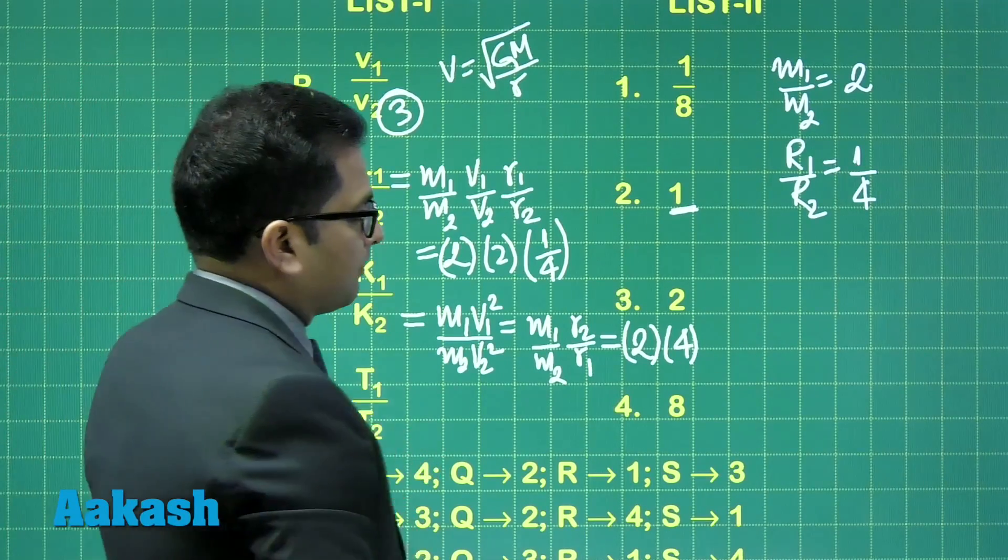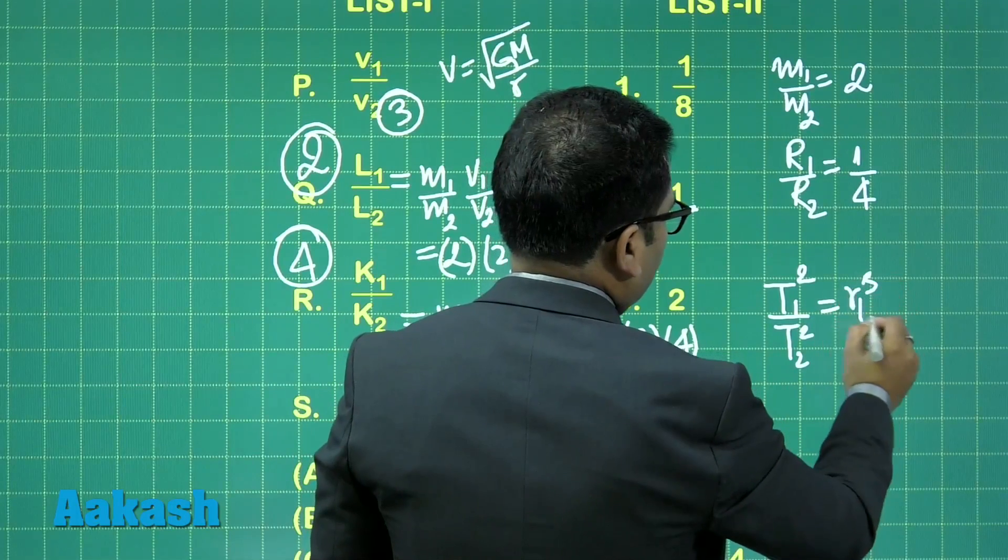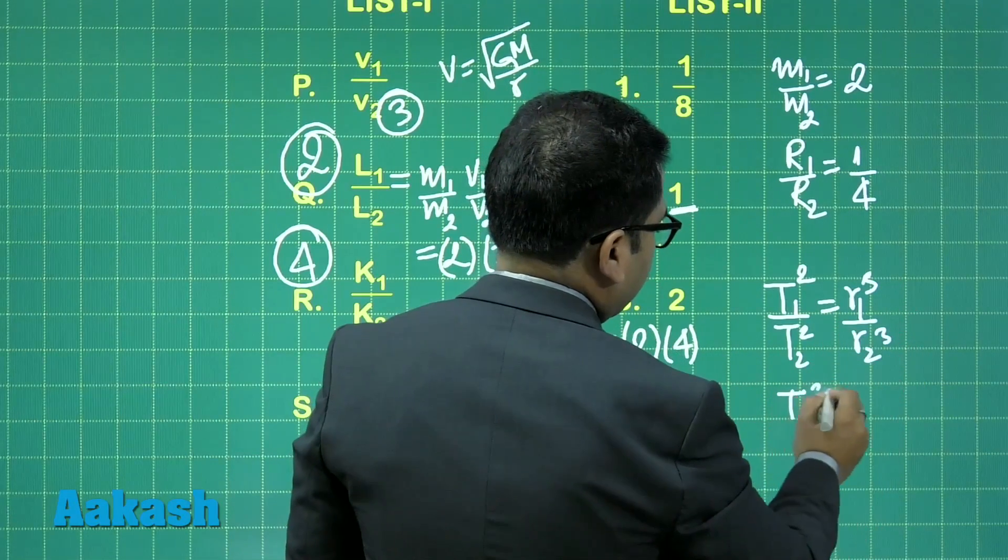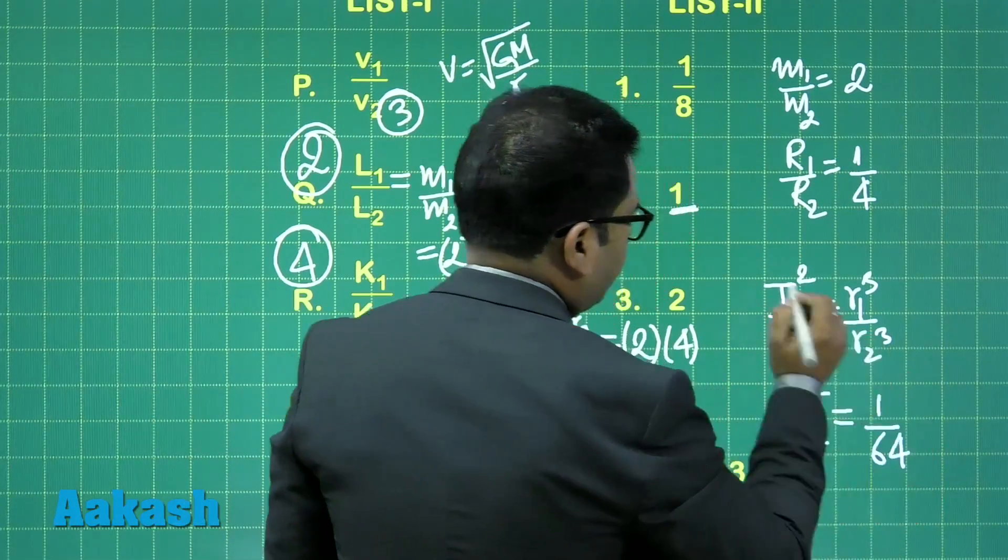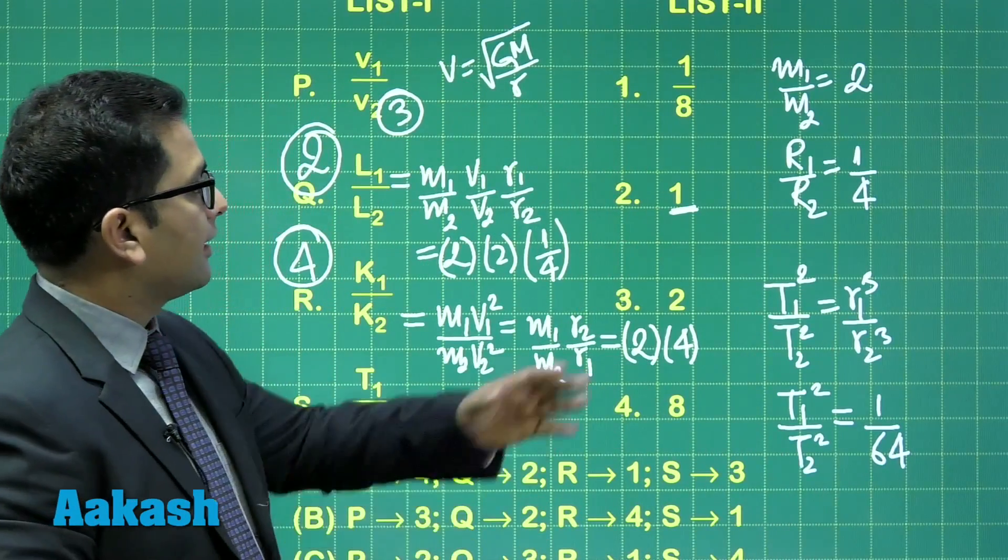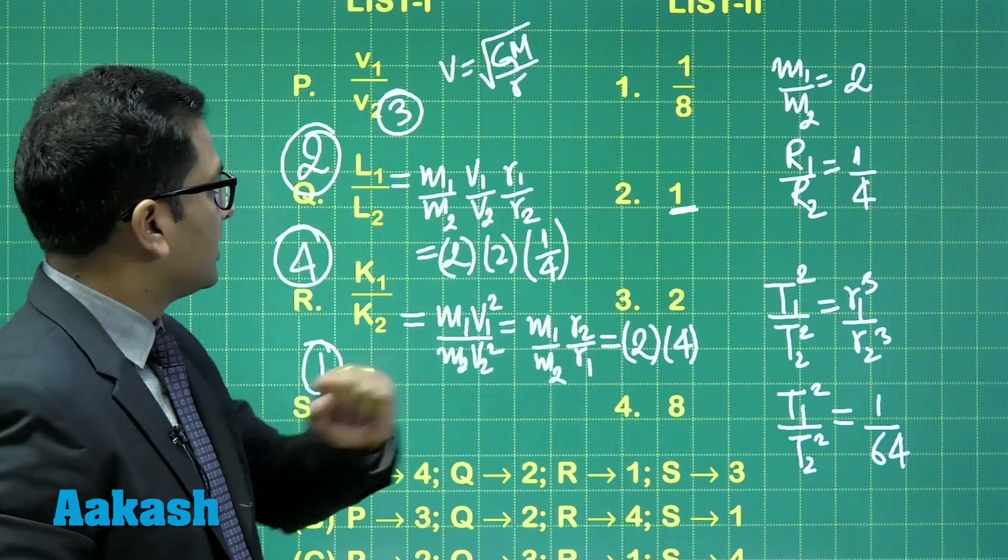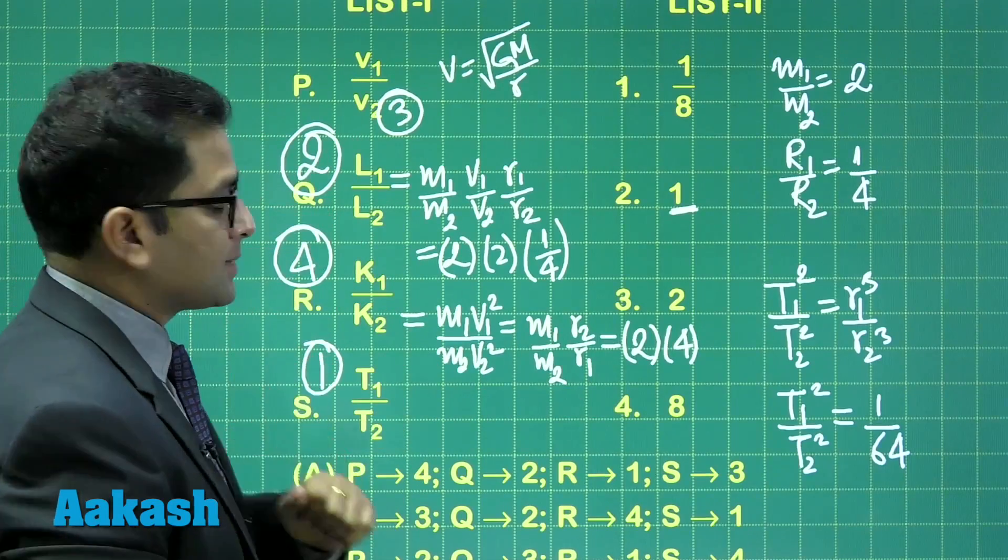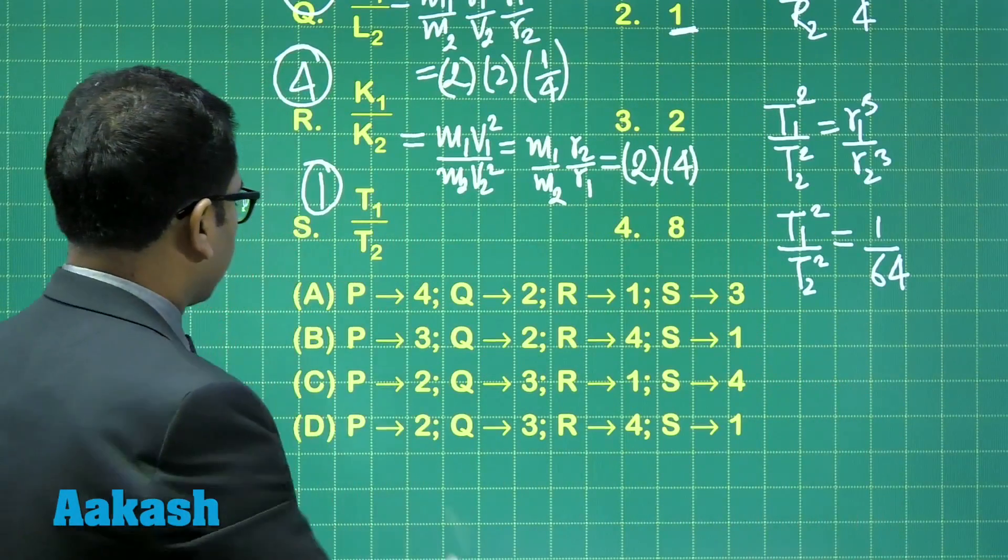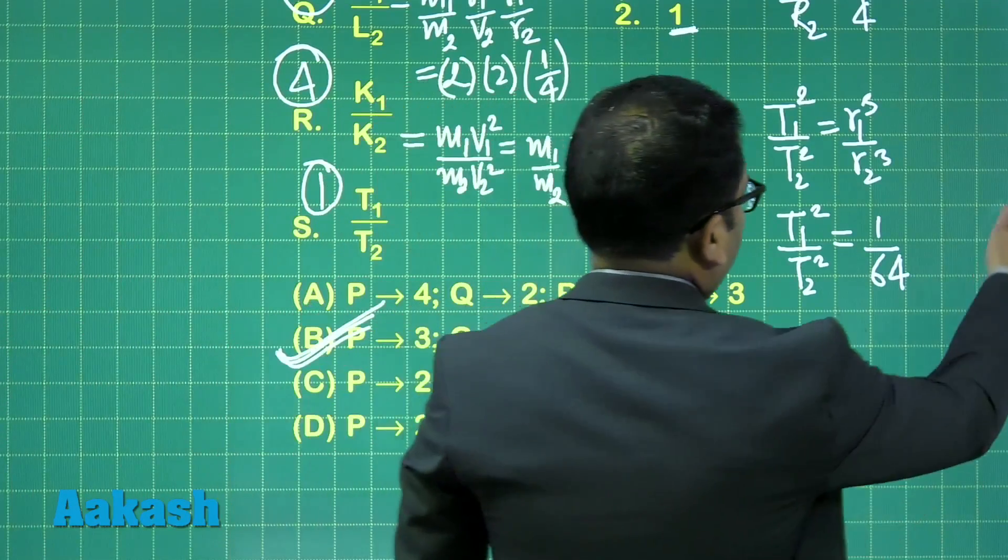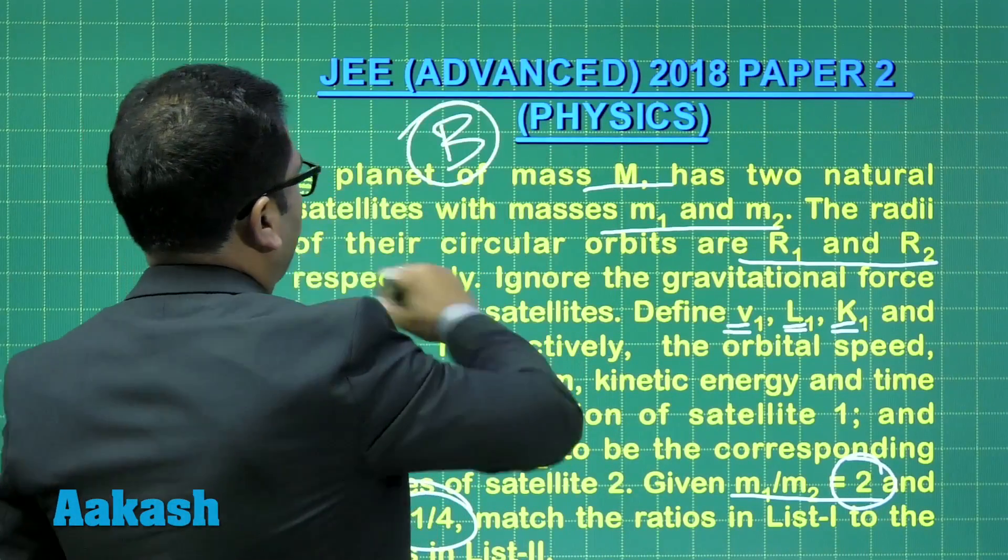For time period, T1²/T2² = R1³/R2³ = (1/4)³ = 1/64. Therefore T1/T2 = 1/8, which is option 1 for S. So we have P→3, Q→2, R→4, S→1, which matches option B. For question 16, the correct answer is option B.